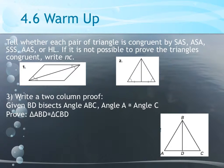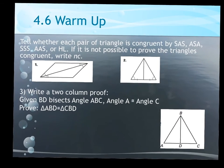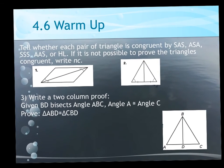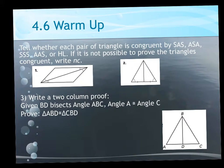All right, so in 4-6 we talked about angle-angle-side and angle-side-angle, the last two shortcuts to proving that triangles are congruent, which means we now have five: side-side-side, side-angle-side, angle-side-angle, angle-angle-side, and hypotenuse-leg.